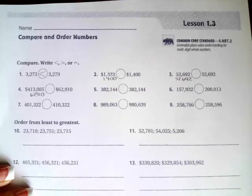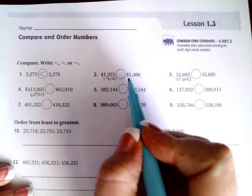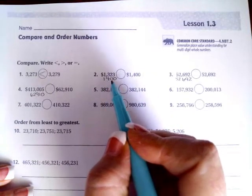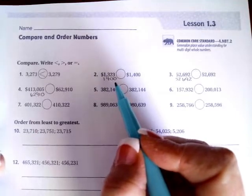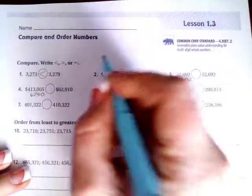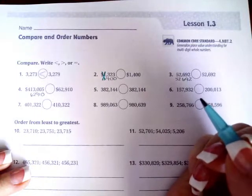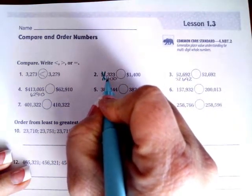Welcome to fourth grade chapter 1 lesson 3. All this wants to know is which numbers are bigger or smaller. I have taken the number from the right-hand side and written it underneath the number from the left-hand side so that I can really compare the two numbers. The first number is the same, so I'm going to cross that out — I don't need to know about that. The second number: this side's a 3, the other side's a 4.